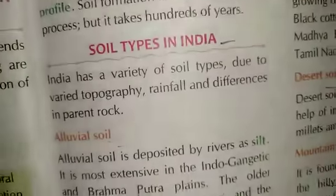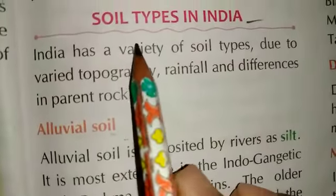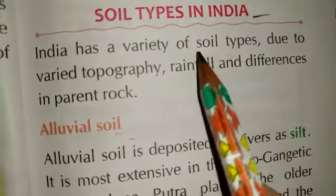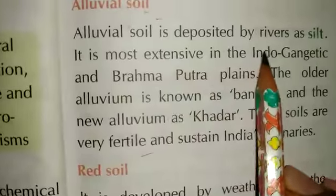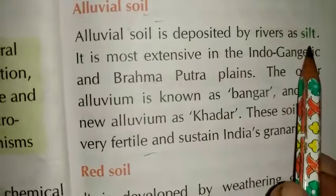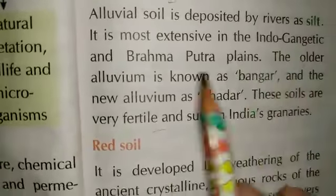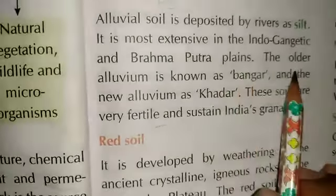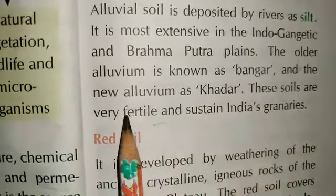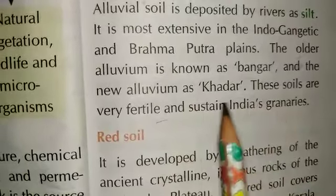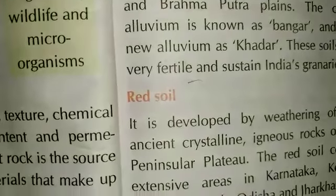Now we will read about soil types in India. First, alluvial soil — alluvial soil is deposited by river silt. It is found in the Indo-Gangetic and Brahmaputra plains. Older alluvial soil is known as Bhangar, and newer alluvial soil is known as Khadar.